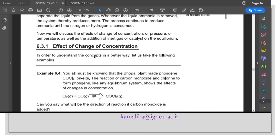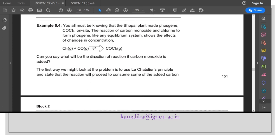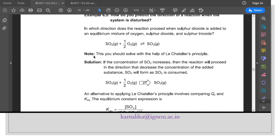In section 6.3.1, there is the effect of change of concentration, which is discussed with the example of the preparation of phosgene. This principle helps us predict the direction of the reaction when the system is disturbed.